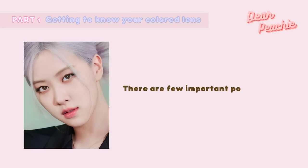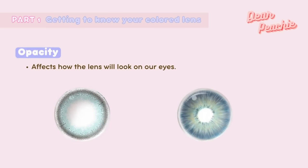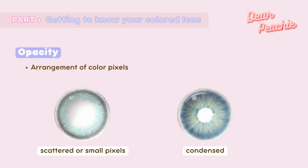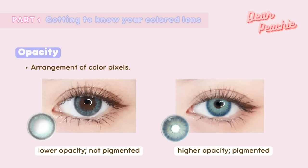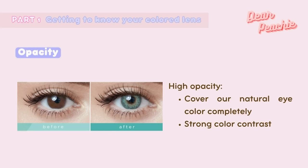The opacity of the lens plays a major role in how the lens will look on your eyes. You can roughly identify whether a colored lens will look good on you by looking at the lens display picture. If the colored pixels are arranged in a scattered manner and the pixel size is small, the color will likely not be pigmented enough for your iris and won't cover your natural eye color visibly. Lenses with high opacity will cover your natural eye color completely and create a strong contrast.